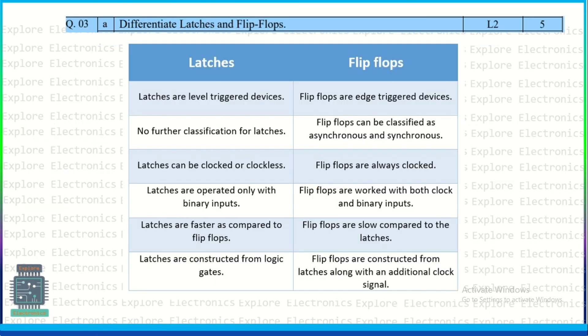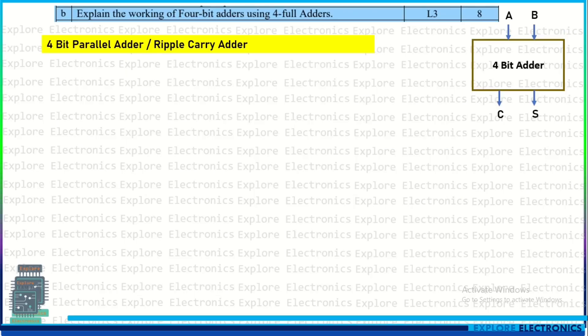The next question differentiates latches and flip-flops. The main difference is that latches are level-triggered devices while flip-flops are edge-triggered devices. Latches may or may not contain a clock, while flip-flops always require a clock. Both are constructed using logic gates, but flip-flops can also be constructed using latches.